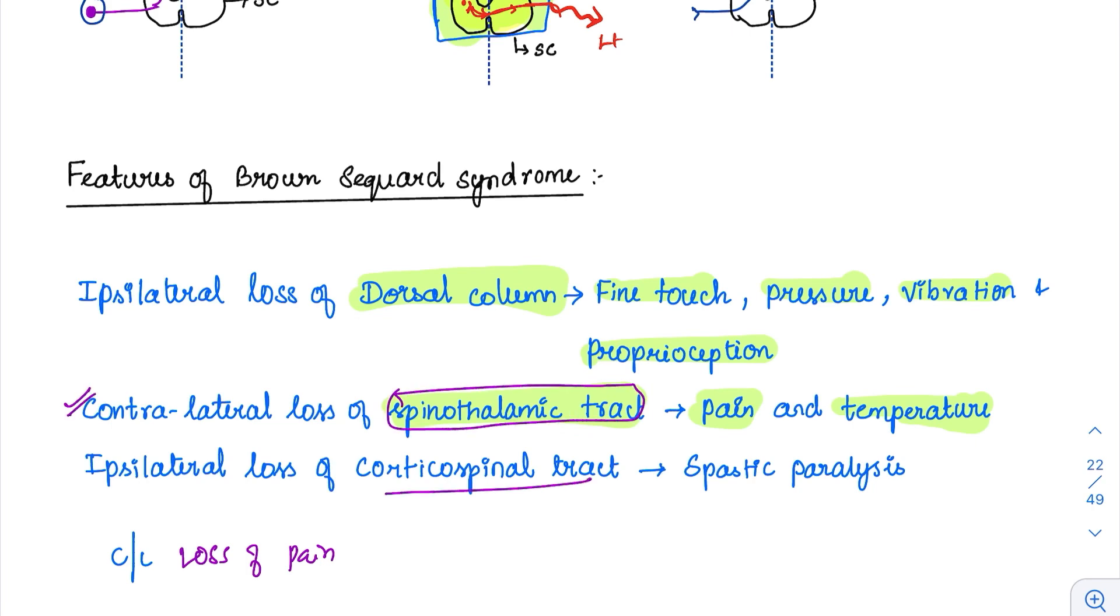Only contralateral tract is the spinothalamic tract. Then ipsilateral loss of corticospinal tract. If corticospinal ipsilateral loss is there, there will be ipsilateral paralysis. The spastic kind of paralysis will be there. So loss of pain and temperature are only happening in the contralateral side.